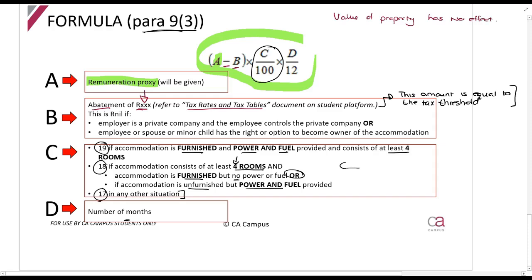What I mean is, let's say you give the CEO of the company a flat to stay in with a market value of R600,000. And for both of these examples, four rooms plus power plus furniture, so everything is given.